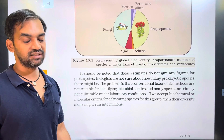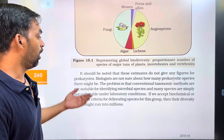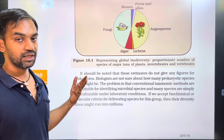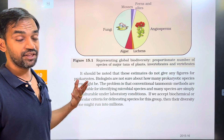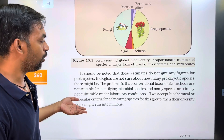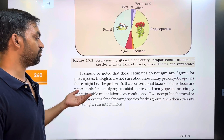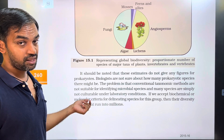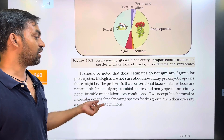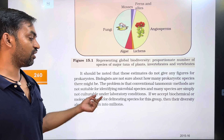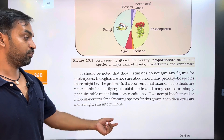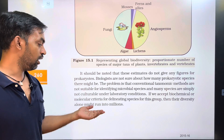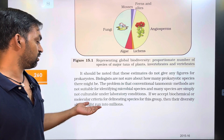Prokaryotes like bacteria and actinomycetes are not included in these estimates. Biologists are not sure about how many prokaryotic species there might be. The problem is that conventional taxonomic methods are not suitable for identifying microbial species, and many species are simply not culturable. If we accept biochemical or molecular criteria for delineating species for this group, their diversity alone might run into millions.